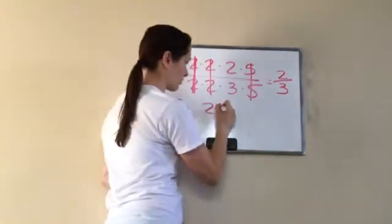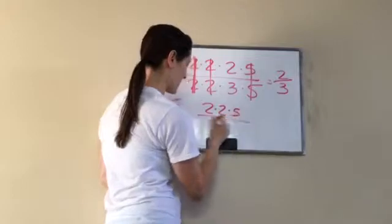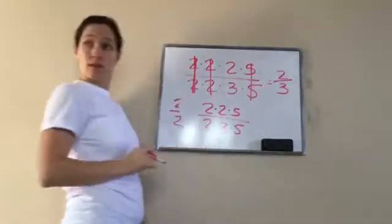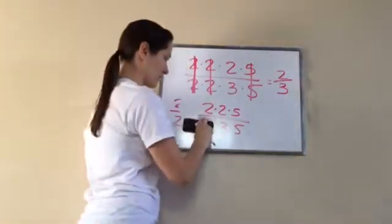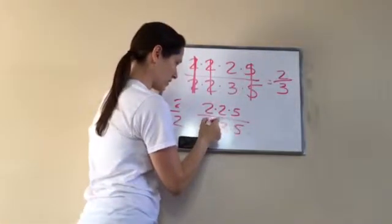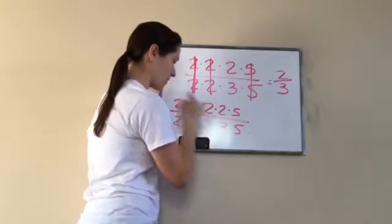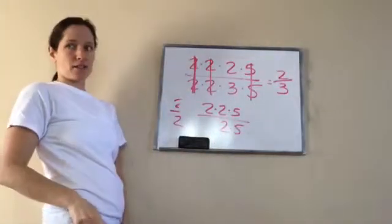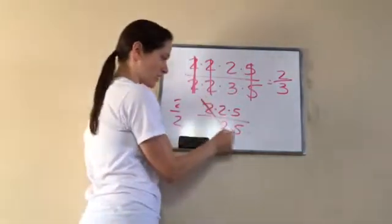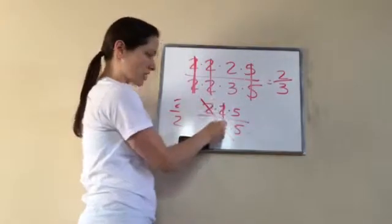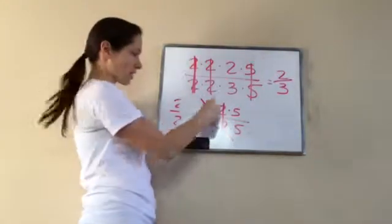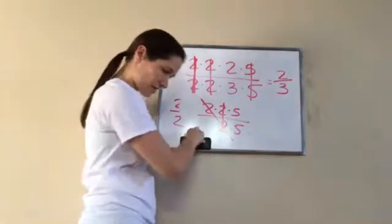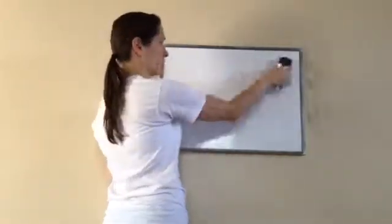Now, sometimes the numbers aren't going to line up. You can even cross sideways — you just have to connect two of them and draw a line through it. So that's the answer on that one.